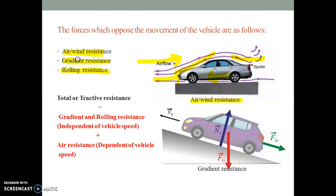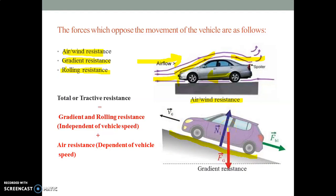The second type of resistance is gradient resistance — gradient in the sense of the inclination of the road. As the steepness of the road increases, the resistance offered on the vehicle also increases. As shown in the diagram, the vehicle is moving in the forward direction as steepness increases. We consider the weight of the automobile acting downwards, normal forces applied perpendicular to the surface, and the resistive forces always acting in the opposite direction.